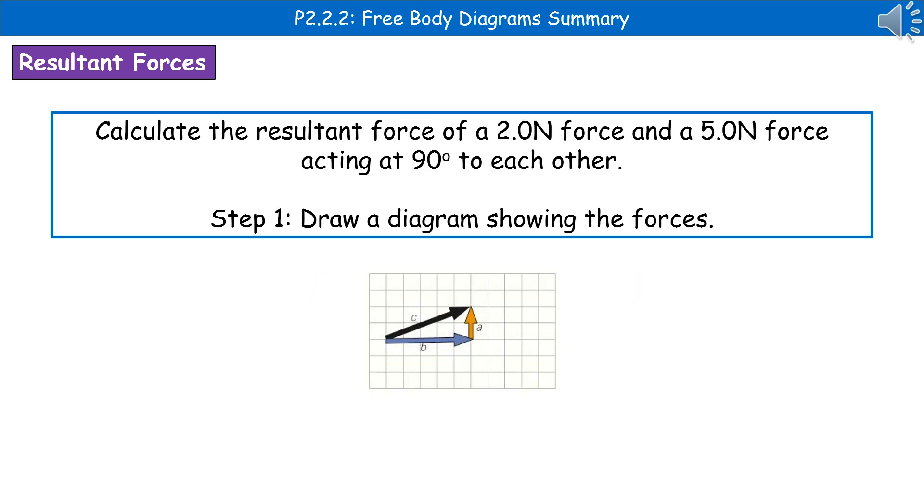The kind of question they could ask you is this one here. Calculate the resultant force of a 2.0N force and a 5.0N force acting at 90 degrees to each other. If you had that kind of question, the big hint would be that they'd give you a piece of graph paper printed in the exam booklet to use.